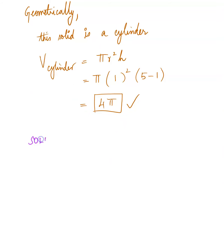Now we have something called solids of revolution. This means we generate 3D figures by revolving or rotating them about the x-axis or y-axis. When you rotate a 2D region, you get a 3D solid. Because of the smoothness of the rotation, you can slice that 3D figure to obtain disks, and these disks are circular in nature. The cross-section of a solid of revolution will always produce a circular disk.